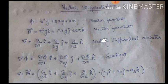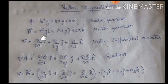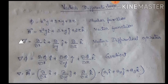Next we introduce the vector differential operator. A differential operator is different from a vector differential operator. The vector differential operator, called del, is: partial derivative with respect to x times i cap, plus partial derivative with respect to y times j cap, plus partial derivative with respect to z times k cap.